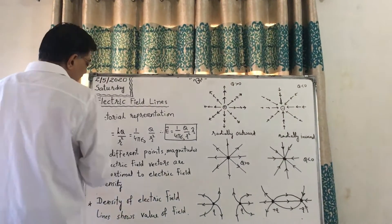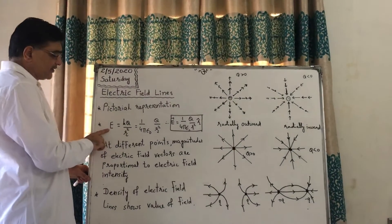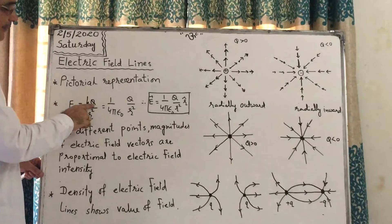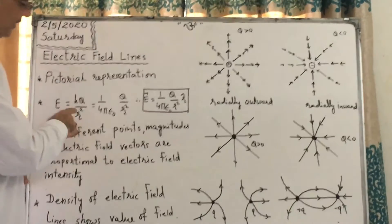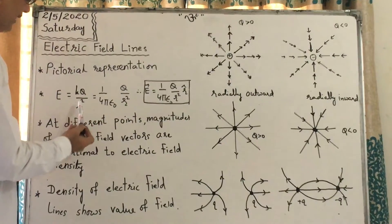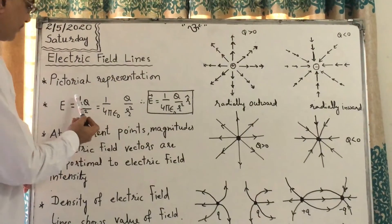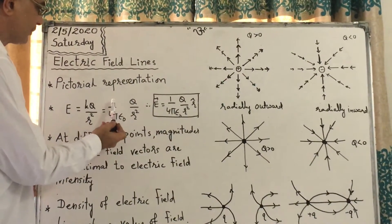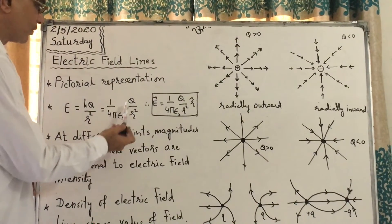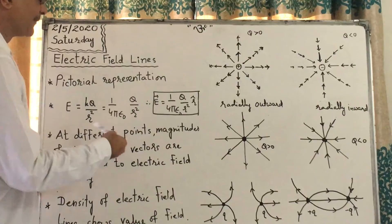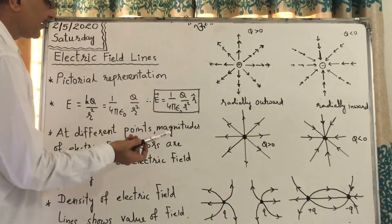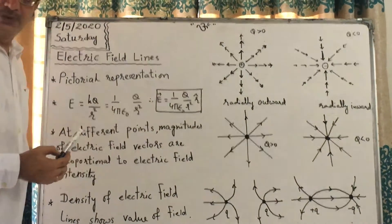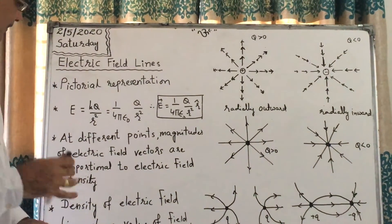What is electric field intensity? It is for source charge capital Q. Electric field intensity is K·Q divided by R squared, or we can write 1 upon 4·pi·epsilon-not times Q divided by R squared, and its vector form we just add R-cap.